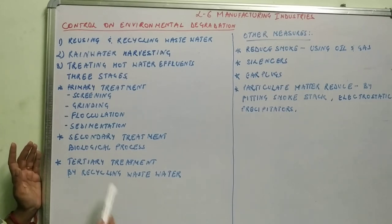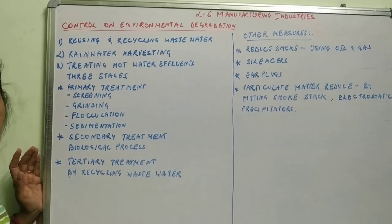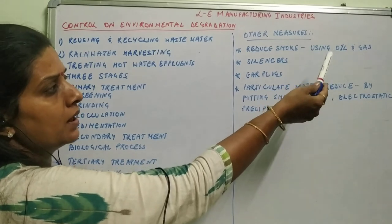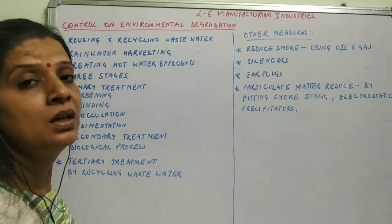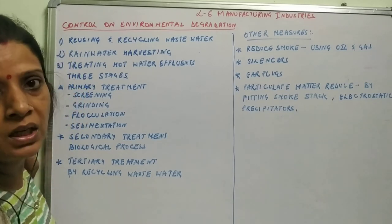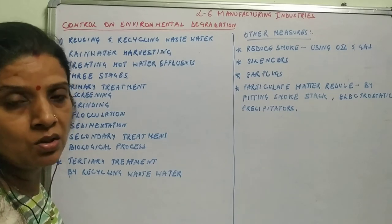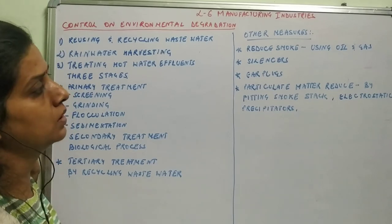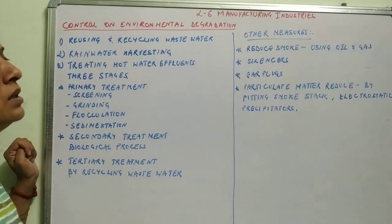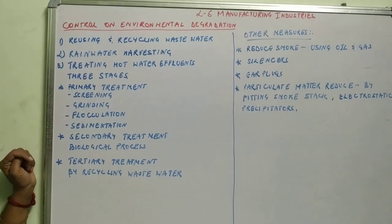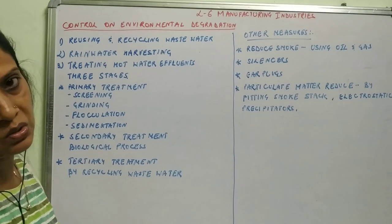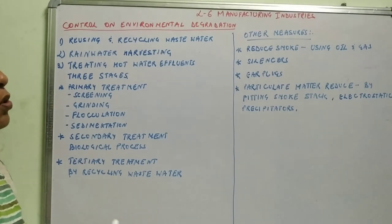The third is tertiary treatment, which involves recycling wastewater through different successive stages. Other measures include reducing smoke by using oil and gas instead of coal, since coal produces more smoke. Silencers should be fitted to industries and generators to reduce noise pollution. People can also use earplugs to avoid noise pollution. Particulate matter can be reduced by fitting smoke stacks, smoke absorbers, and electrostatic precipitators to control smoke.